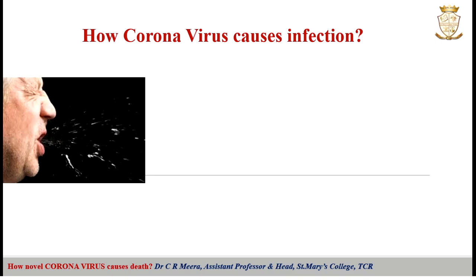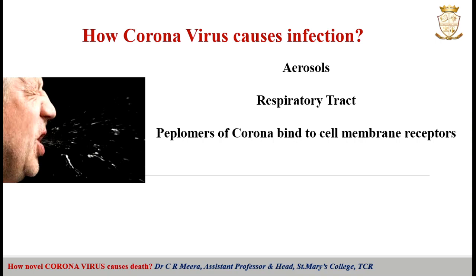How coronavirus causes infection. Viruses are released from infected persons as aerosols through coughing, sneezing, talking, etc. If we come in contact with these aerosols, viruses enter our respiratory tract and come in contact with the nostrils, throat, trachea, lungs, bronchi, alveoli, etc.